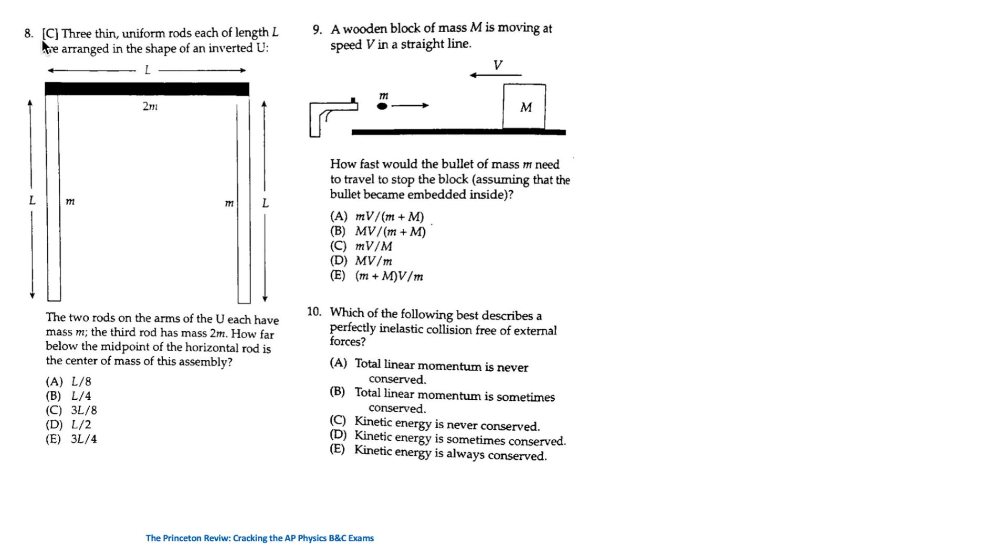For question 8, three thin uniform rods, each of length L, are arranged in this shape. The two rods on the arms of the U each have mass M. The third rod has mass 2M. The question is, how far below the midpoint of the horizontal rod is the center of mass of this assembly? So below this point. Because these rods have uniform density, the center of mass for each is located at its geometric center.